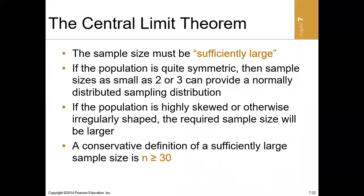The sample size must be sufficiently large for us to conclude that the sampling distribution is normal. In statistics, a large sample size means 30 and above. This brings us to the end of part two of the series on sampling distributions. In the next part I'll be teaching on sampling distributions of proportions, so let's meet in part three.